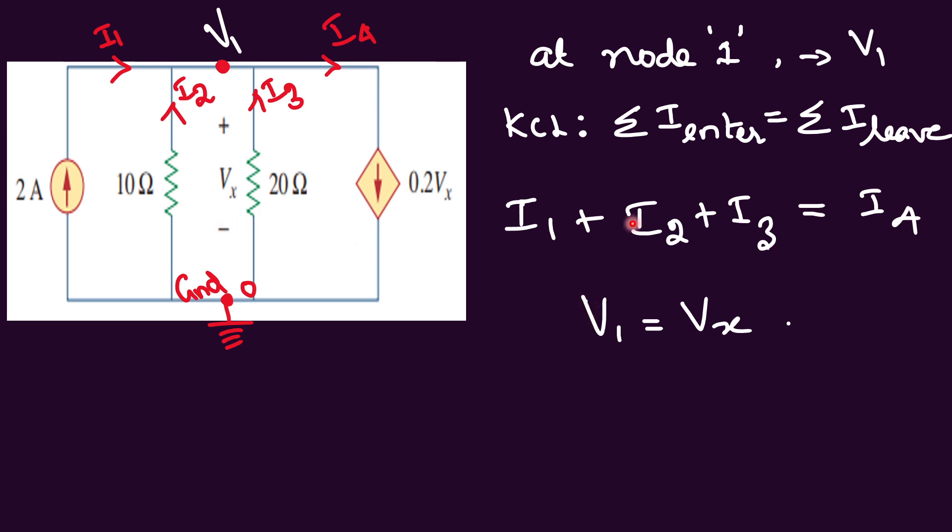Now we are going to apply Ohm's law for these currents. How do you write I1? I1 can be written as 2 amps because it is given in the problem itself. Then I2, it can be written as 0 minus this V1 divided by this 10 ohm resistance. Similarly, I3 is 0 minus V1 divided by this 20 ohm resistance. And what is I4? It is already given in the circuit itself, so it is 0.2 Vx.